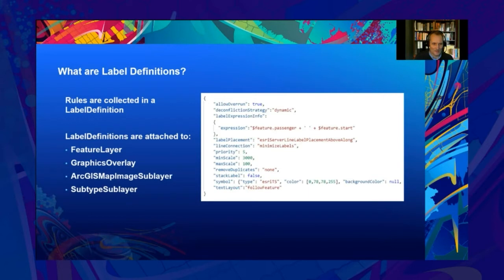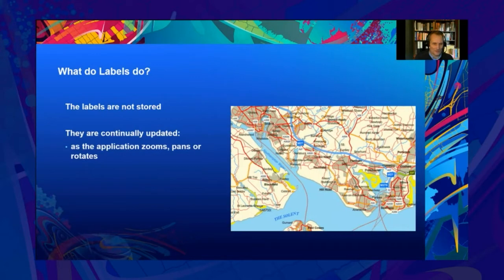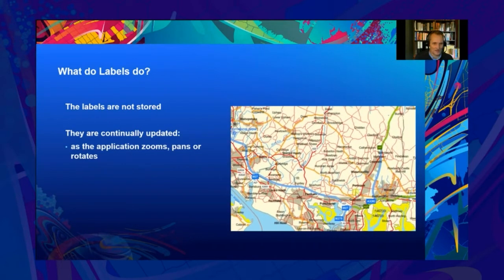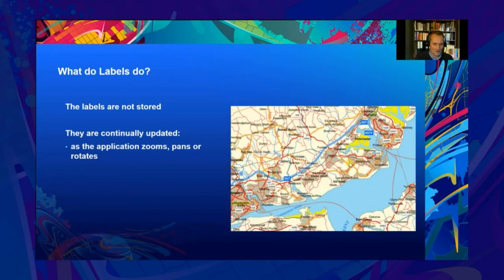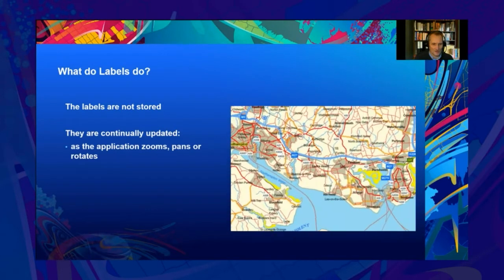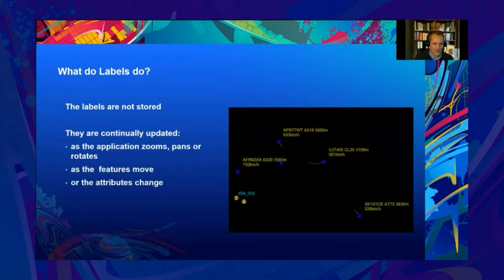One or more label definitions can be attached to each layer of features. Currently, label definitions are supported for feature layers, graphics overlays, ArcGIS map image sub-layers, and subtype sub-layers. The labels are created purely for the display and are not written to a database or file. Labels are continuously updated on the view as the application zooms, pans, or rotates, and new features come into view, or more space becomes available for lower priority labels. Changes to individual features can also trigger updates to label contents and positions, whether it is the feature's position changing or the feature's attributes which drive the label text.